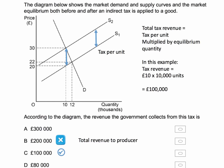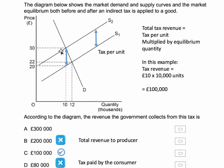A is just the total amount spent by consumers, but some of that is tax of course, so A is wrong. And D is wrong — £80,000 is actually the tax paid by the consumer. Don't forget, they're paying £8 extra, buying 10,000 units, so this is the consumer burden of the tax.